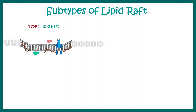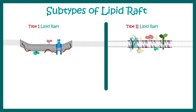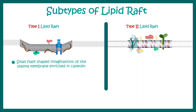There are two subtypes of lipid raft. One is known as Type 1 and another is Type 2 lipid raft. Type 1 lipid raft is a small flask-shaped invagination that is highly enriched in caveolin and often is involved in caveolin-mediated endocytosis. Type 2 lipid raft, also known as the linear lipid raft, is mostly found in neurons and is highly enriched in the protein flotillin.